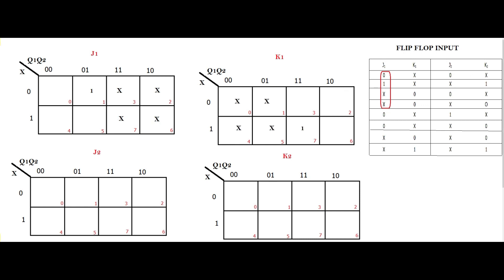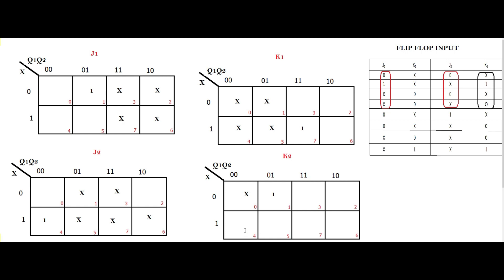We do not fill 0s explicitly in the K-map — it is understood. For K1, we fill: 0, x, 0, x for the first four, and then 1, x, x, x. For J2 and K2, we fill similarly. For J2: 0, x, 0, x then 1, x, x, x. For K2: x, 1, x, 0 for the first four, then the remaining values give 0, 0, and 1 accordingly.